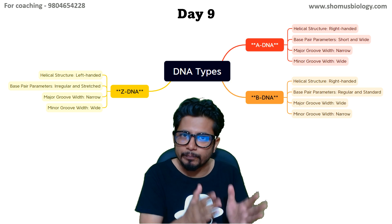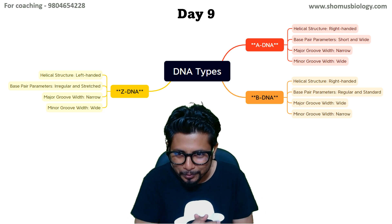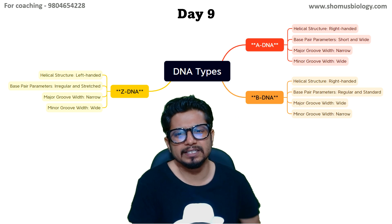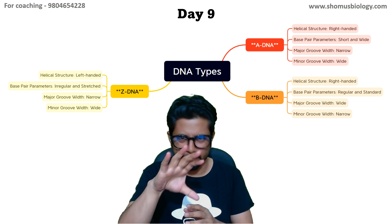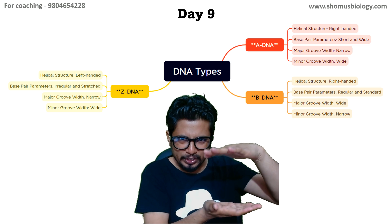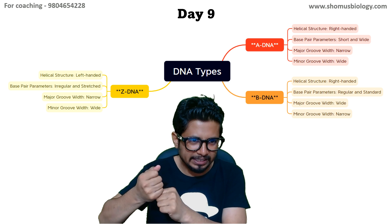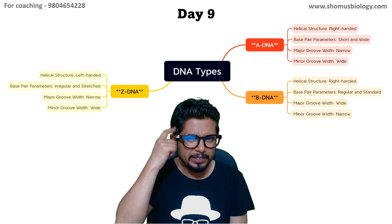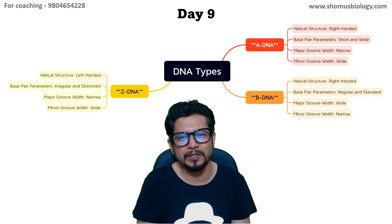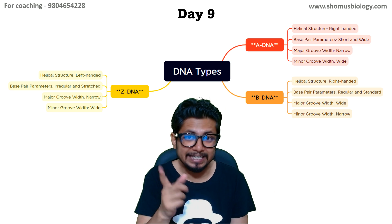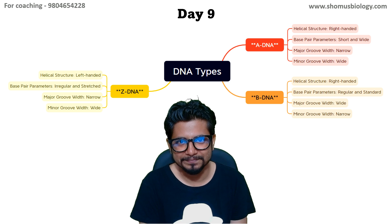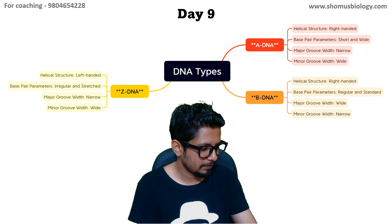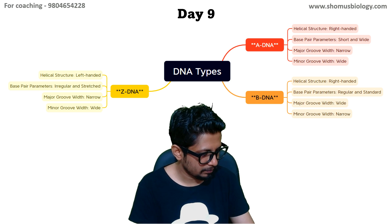In B-DNA the major groove is wide and the minor groove is narrow. To visualize: B-DNA is in the middle, A-DNA is shrunken and compact like a dwarf, and Z-DNA is stretched. This mental image can help you remember and differentiate between the three types of DNA.